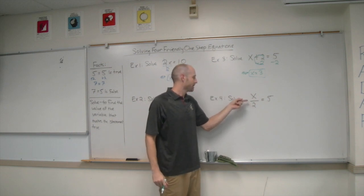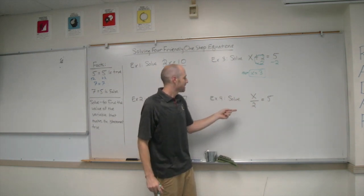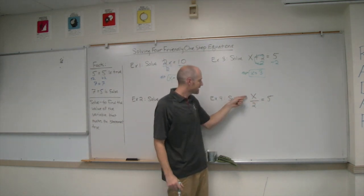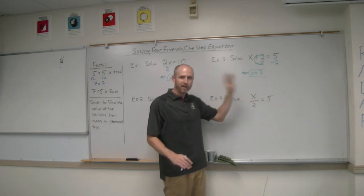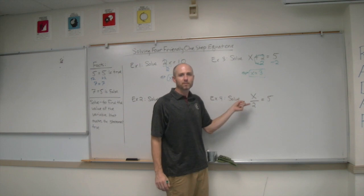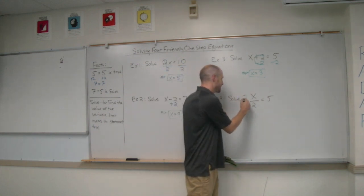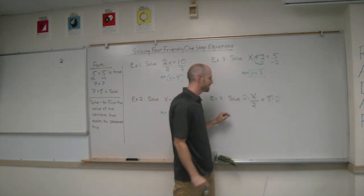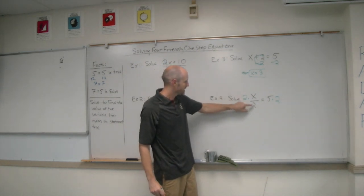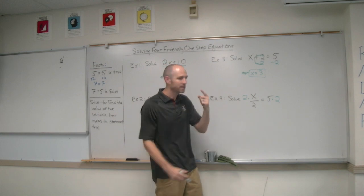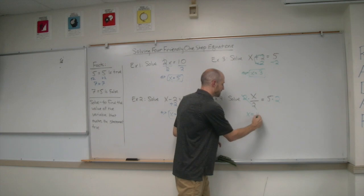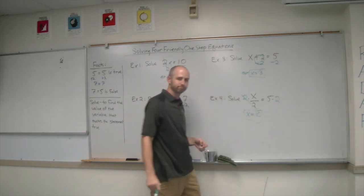The last example is the one students most commonly miss: some number divided by 2 is equal to 5. The number must be 10 — 10 divided by 2 equals 5. For a method, we use the multiplication property of equality, multiplying both sides by 2. Now we have 2 in the numerator and 2 in the denominator, which is a number divided by itself making 1, so we have 1x, giving us x is equal to 10.